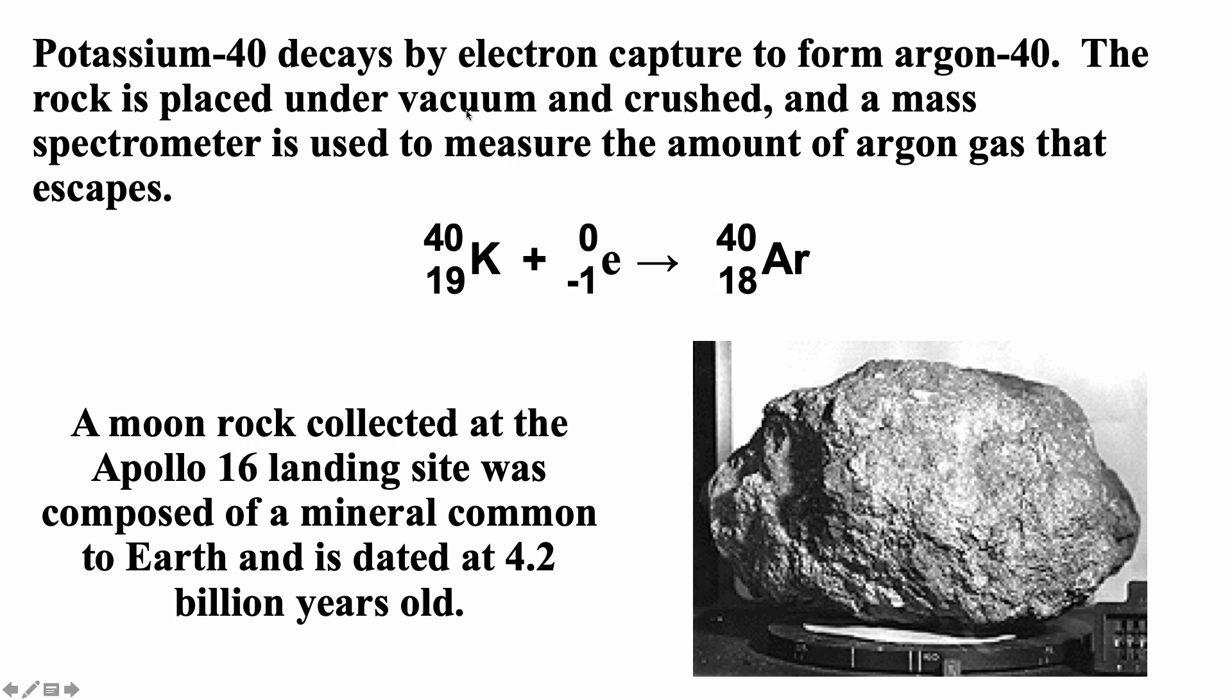Potassium-40 decays by electron capture to form argon-40. You should remember argon is a noble gas. It's not going to be inside a rock because when the rock is formed, the argon will just float away. The rock is placed under vacuum, crushed, and a mass spectrometer is used to measure the amount of argon gas that escapes after you crush the rock. The argon gas was not there initially. The argon gas was only prepared or comes from the potassium. By measuring the ratio of the potassium to the argon, you can actually get a date.